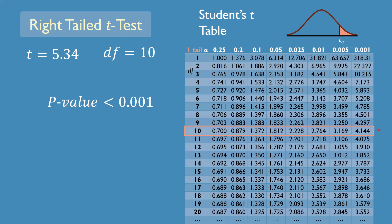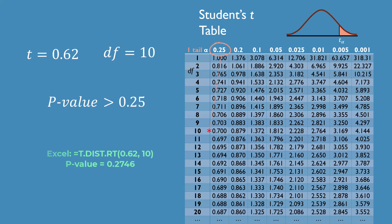On the other hand, if the t-statistic were 0.62, which is less than all the critical values listed here, we say that the p-value is greater than 0.25, or whatever the largest alpha value we have listed.